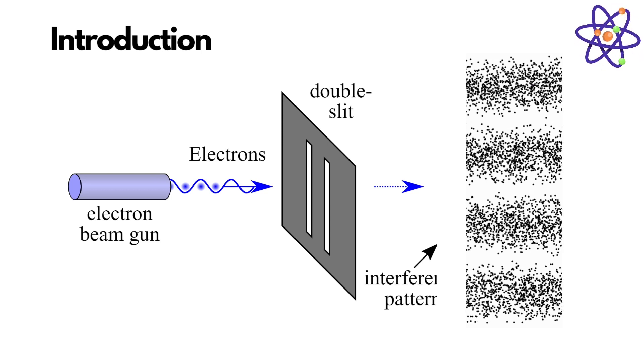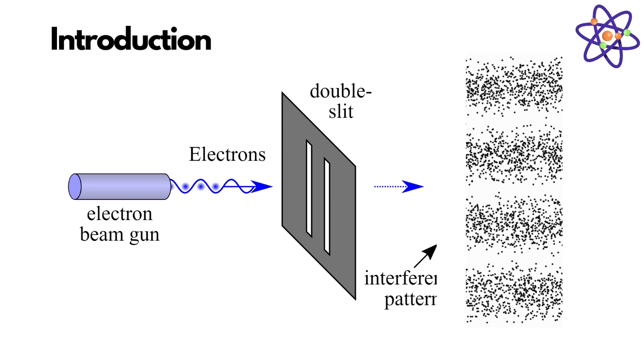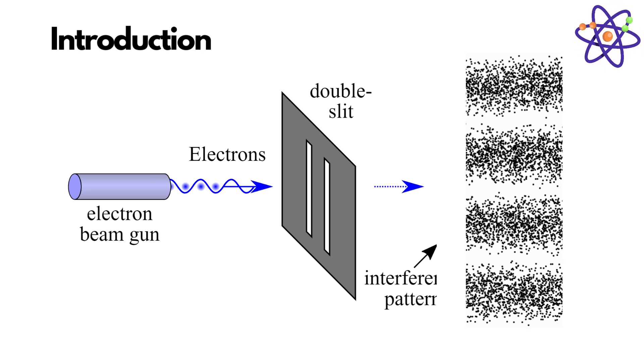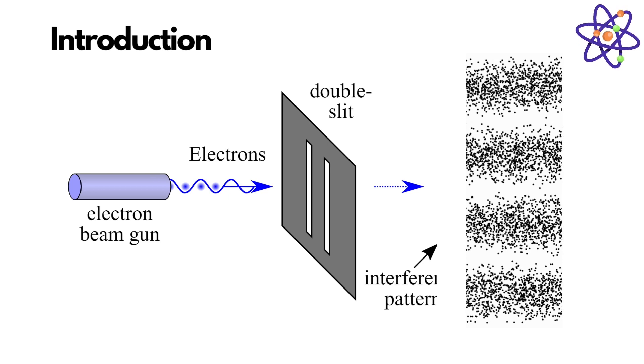Have you ever wondered what happens when light passes through two narrow slits? In this video, we'll explore the fascinating phenomenon of the double-slit experiment, one of the most influential experiments in modern physics.